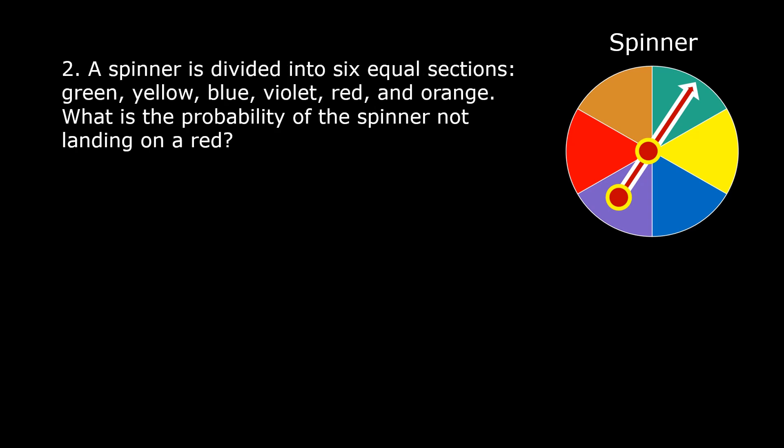Example number 2. A spinner is divided into 6 equal sections: green, yellow, blue, violet, red, and orange. What is the probability of the spinner not landing on red?